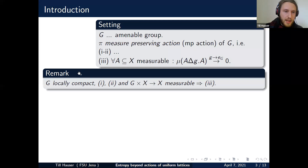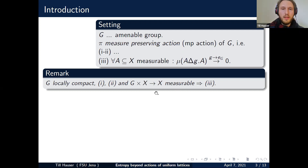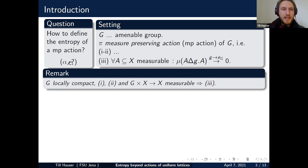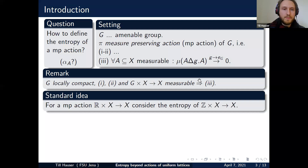The question is how to define the entropy of such a general measure preserving action. The problem arises at the common refinement point because in such general groups, what you use for averaging are no longer finite sets but compact subsets. So you have some compact refinement, but it's an infinite one, and you won't have a finite partition. So it's a little bit unclear how the definition should look.